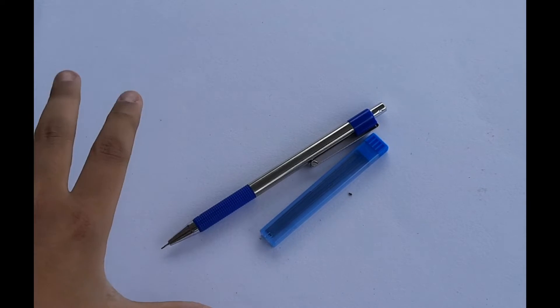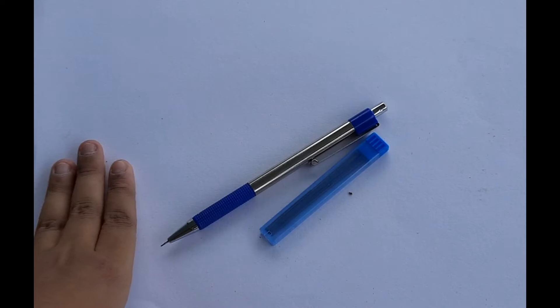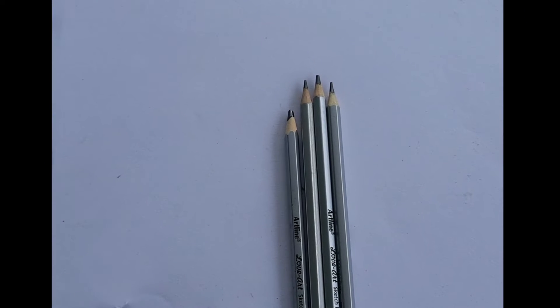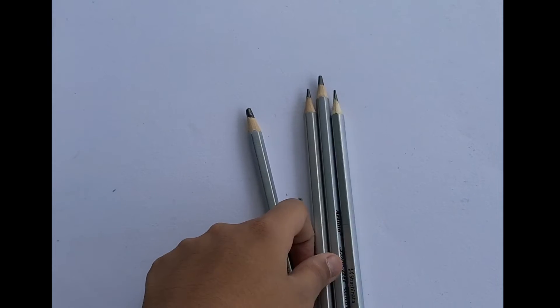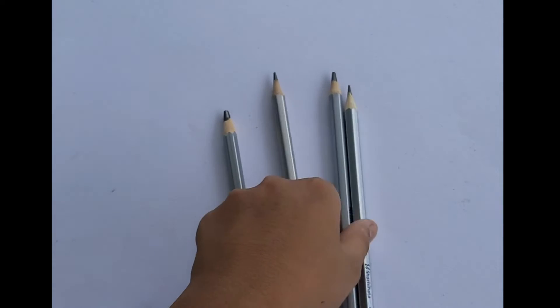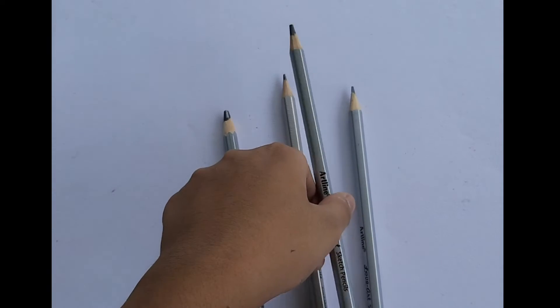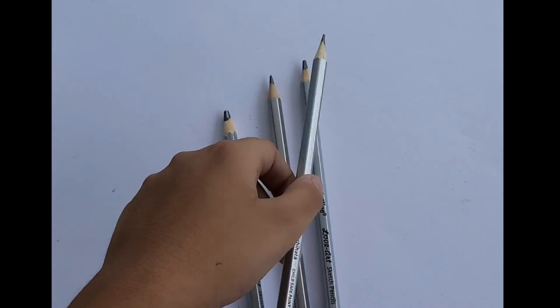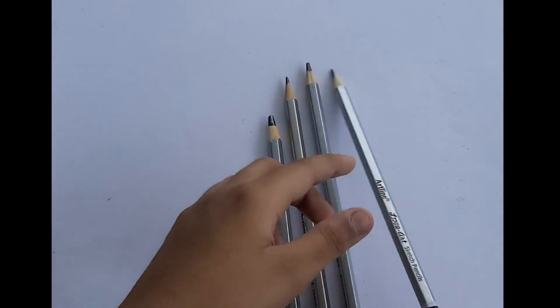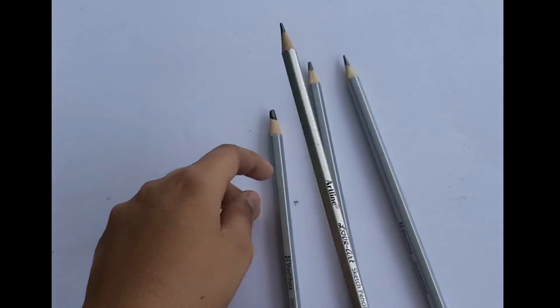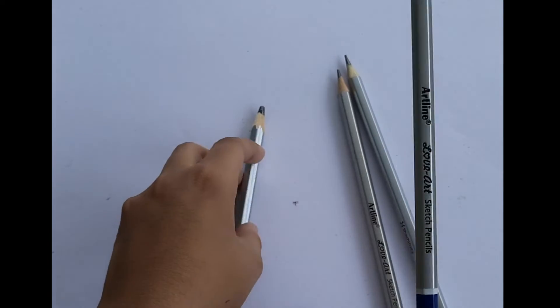This mechanical pencil lead is HB to draw a dark drawing or sketch. So you should purchase and use the Artline pencils from your near stores. You can see I have only 2B, 4B, 6B.